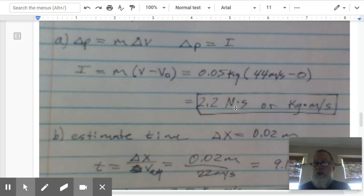But a newton second is the same as a kilogram times meters per second. Newton is kilogram meters per second squared. The seconds here cancels the squared in the denominator, and we end up with just meters per second.